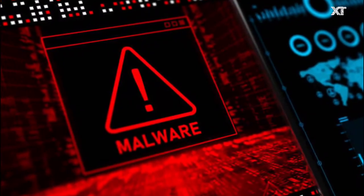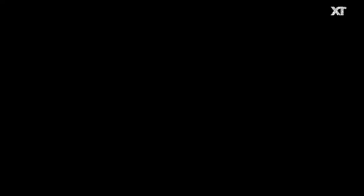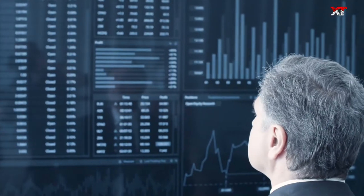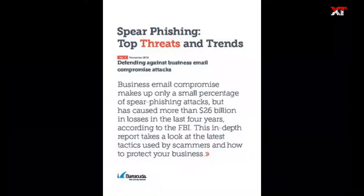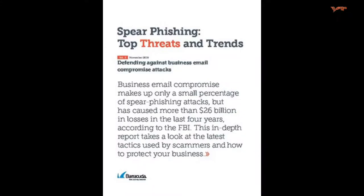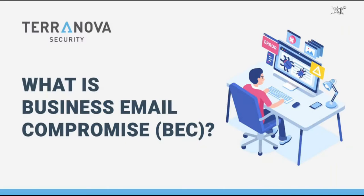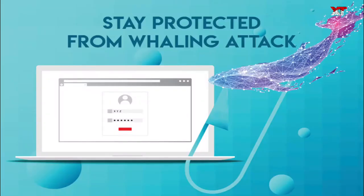These emails frequently employ deceptive strategies to capture the attention of recipients. The FBI, for example, has cautioned against spear phishing schemes posing as emails from the National Center of Missing and Exploited Children. There are some common techniques of spear phishing, which are BEC (Business Email Compromise), Clone Phishing, and Whaling.